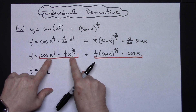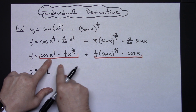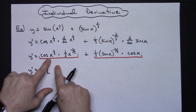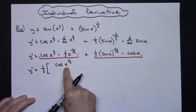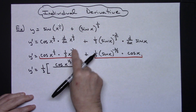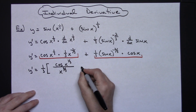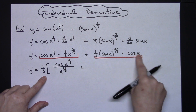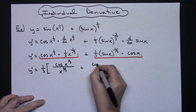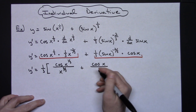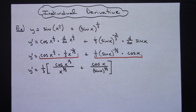With the 1/3rd factored out, I clean up each term. The x to the negative 2/3rds moves to the denominator, leaving cosine of x to the 1/3rd in the numerator — which can also be written as the cube root of x. The second term has cosine x on top and sine x raised to the 2/3rds in the denominator.